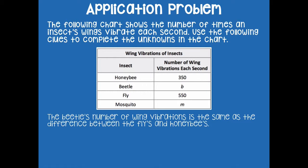Let's look at our first question. The beetle's number of wing vibrations is the same as the difference between the fly's and the honeybee's. So if we find the difference between the fly and the honeybee's vibrations, that's going to be the total number for the beetle. The fly has 550 and the honeybee has 350. Since we're finding the difference, we're subtracting: 550 minus 350 equals B, representing the beetle. Write down the value of the beetle's wing vibrations each second, then click play when you're ready to share your answer.